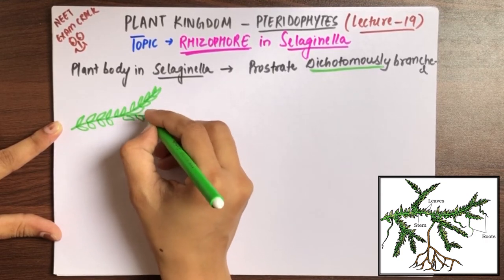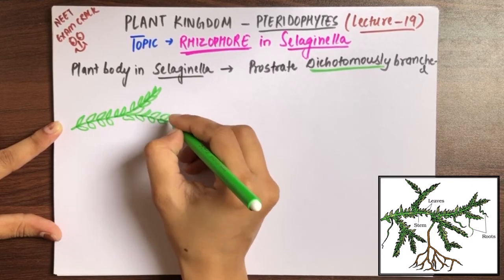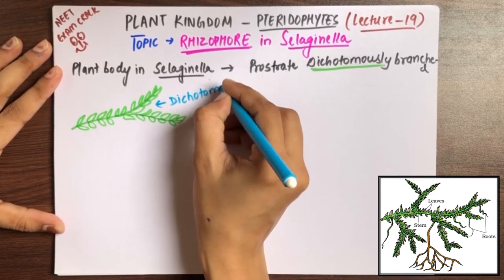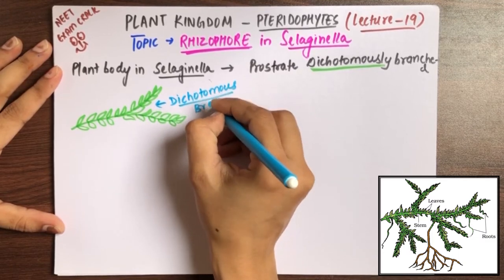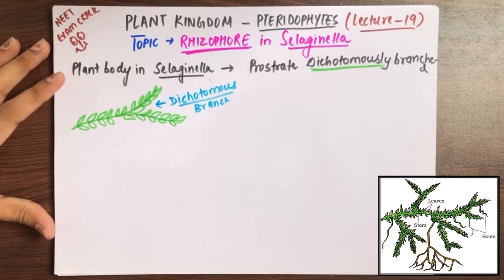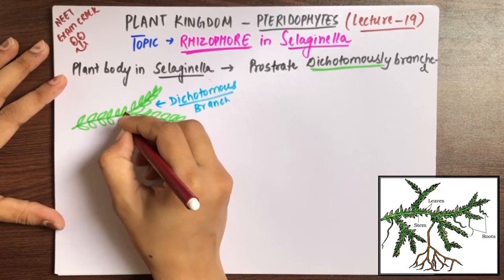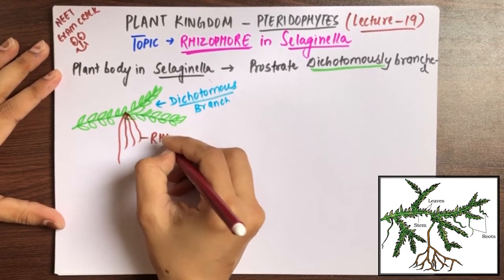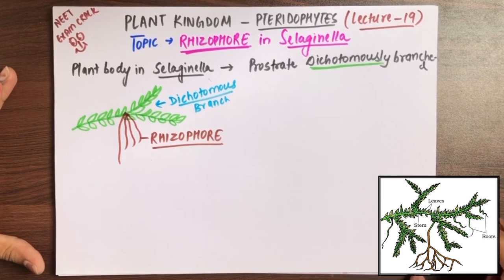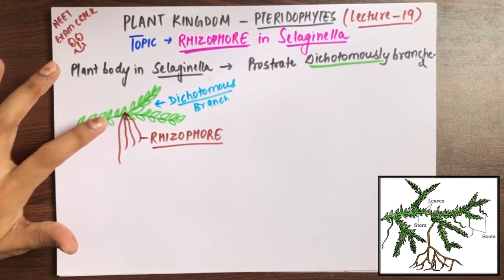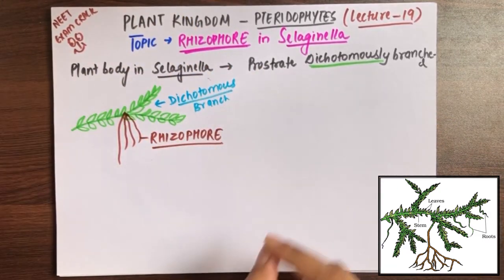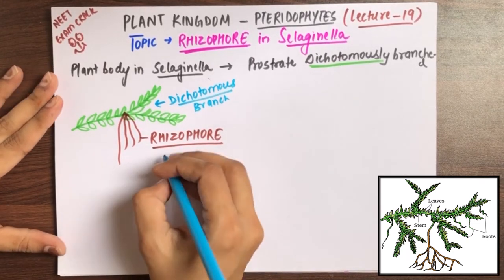Selaginella is dichotomously branched and leafy, with small-sized leaves as we saw in the last video. At the points where the dichotomous branching occurs, you can find some structures coming from below. You can also see this in the diagram — this structure is called the Rhizophore.